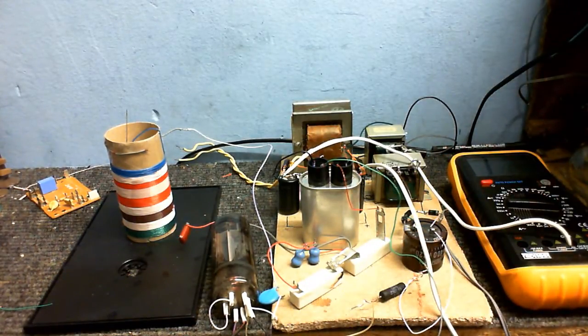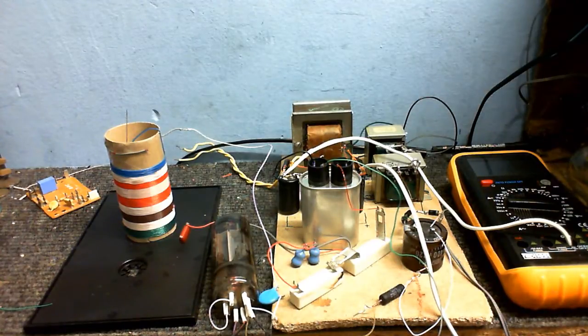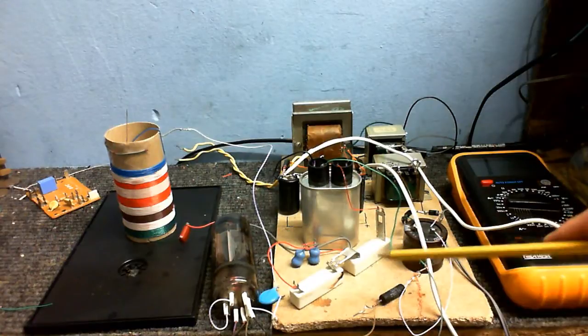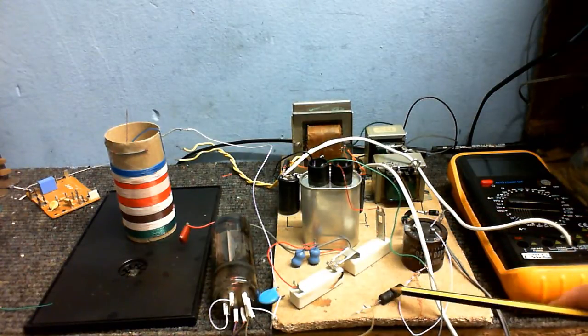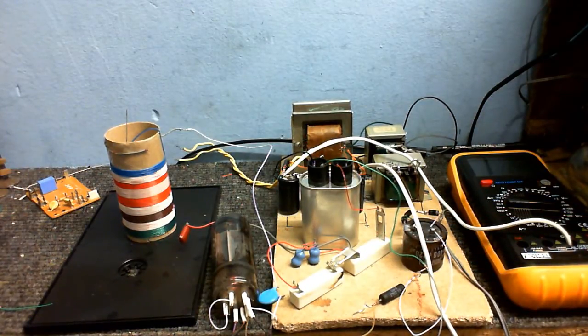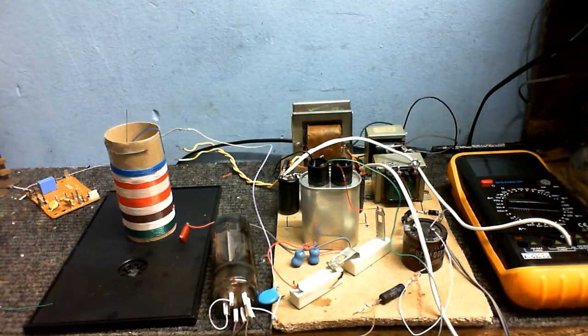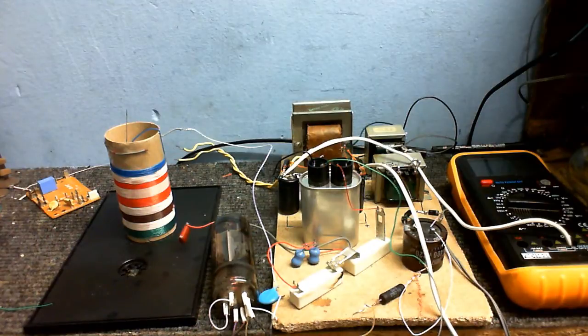And in place of the modulation circuit, I just have this resistor connecting the second grid, the screen grid, to the 300 volt supply, through this 27k ohm resistor. And that gives me about 90 volts on that grid, which seems to work reasonably well.